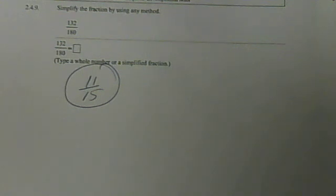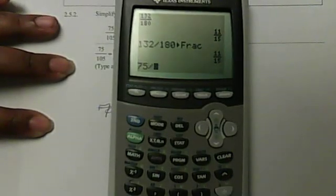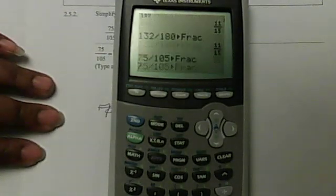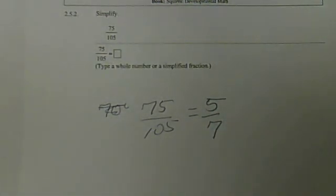So as you can see for sections 2.4 and 2.5, it is not that difficult to simplify fractions. You already know how to simplify them by hand, but the calculator does it faster and more accurately. For the last problem we have 75 over 105: 75 divided by 105, Math, Enter, Enter, and the answer is 5 over 7. This is how you simplify fractions on your calculator — I'll see you later.